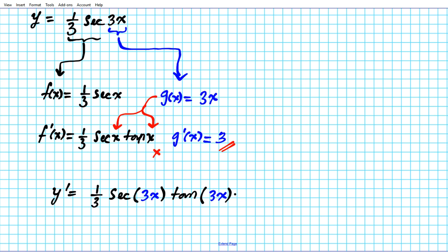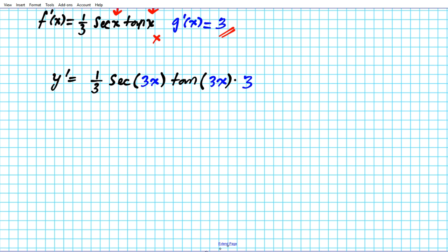All right, so that's the application of the chain rule. We can simplify this. If you notice, 3 goes here, 1, 3 goes here, 1, and your final answer y prime is equal to secant 3x tan 3x.